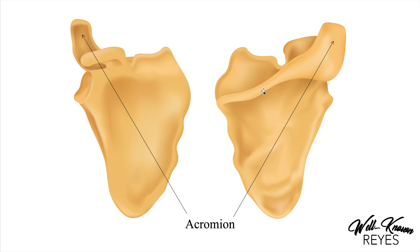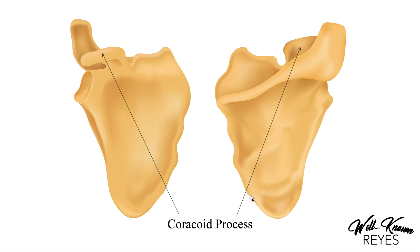Next we have the acromion. The spine of the scapula goes all the way up to the acromion, and we can palpate this on ourselves as well as our clients. Next we have the coracoid process — that is this thing that sticks out right here. I've had students say they call it the witch's finger because it looks like a little finger, and so they call her Cora. If that helps you remember the coracoid process, use it.